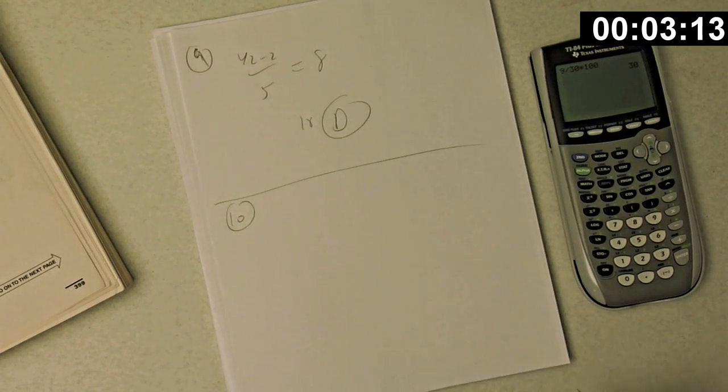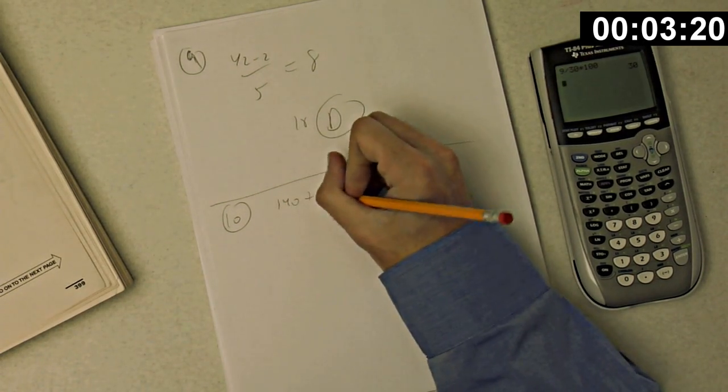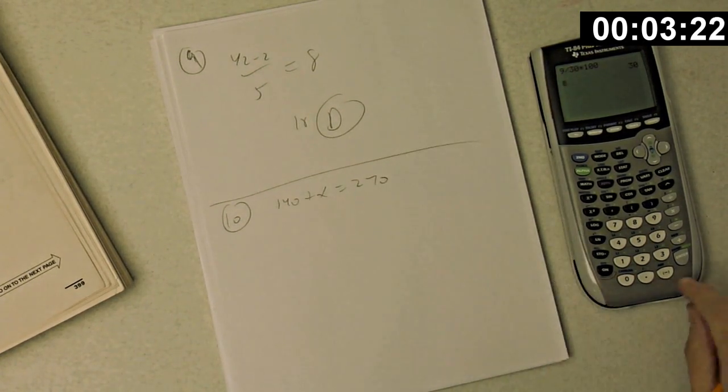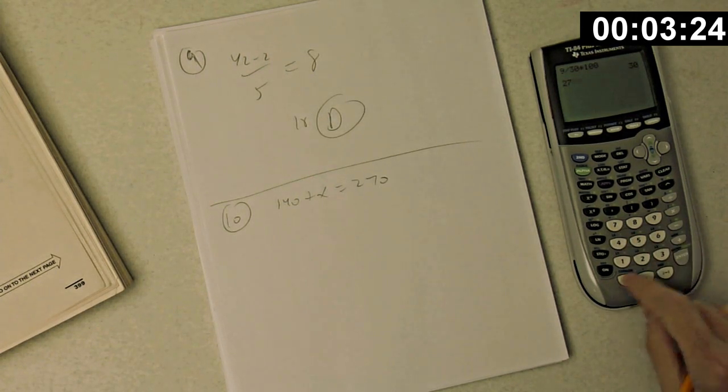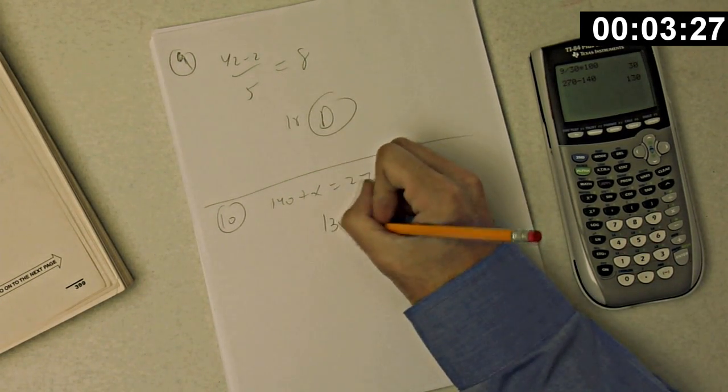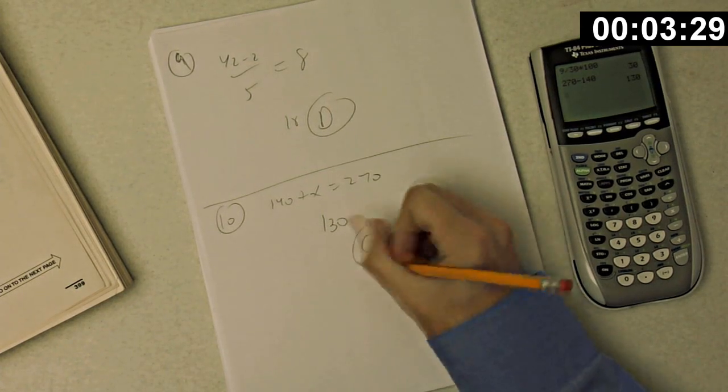Number 10. In the figure above, what is the value of x? So let's see. We have 110 and 30 is 140. We have that 140 plus x is 270. So 270 minus 140 is 130, and that would be choice C.